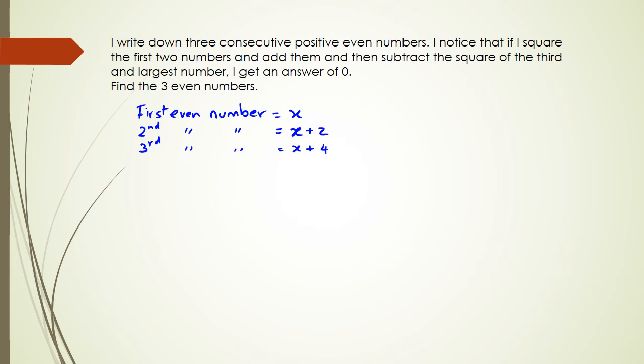So we have our first even number. We are squaring the first even number, plus the second even number squared, minus the third even number squared, and all of that is actually equal to zero.